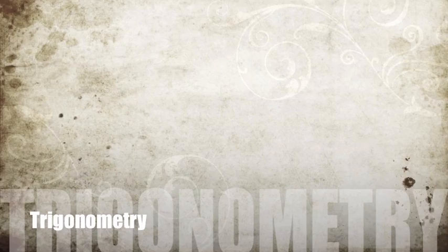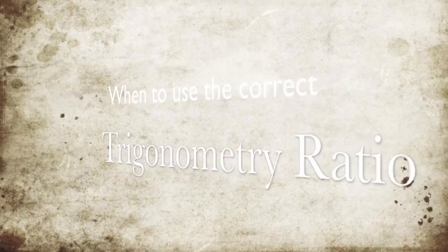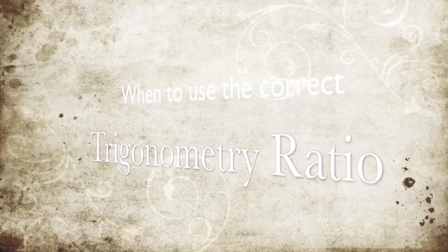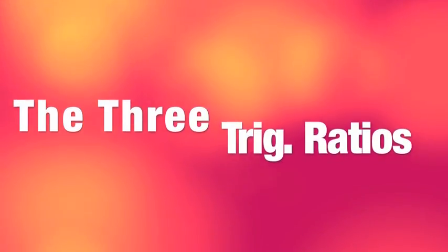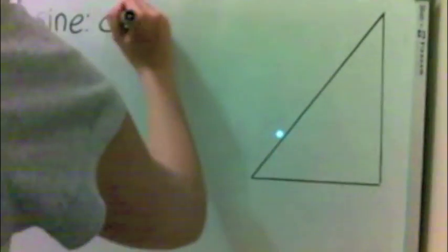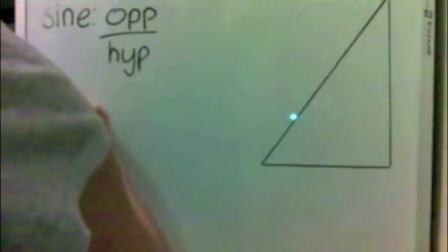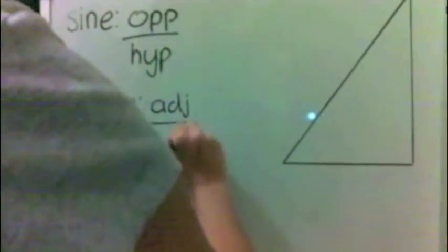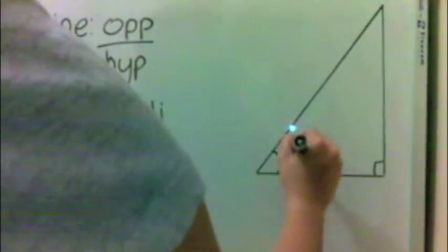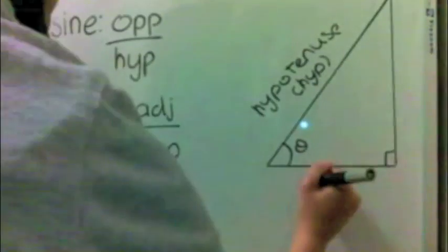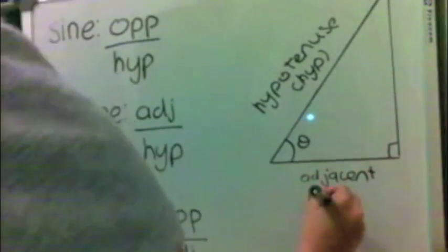Hello, I am Naomi and I am Samantha. Today we will be learning about how to use the correct trigonometry ratio to find the unknown in right angle triangles. There are three types of trigonometry ratios: sine, cosine, and tangent. We always start with the given angle — not the right angle, but the angle marked as theta, a pronumeral, or with a given value. After locating this angle, we determine the adjacent side, opposite side, and the hypotenuse.